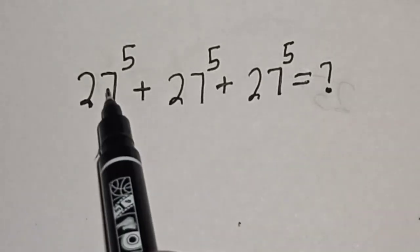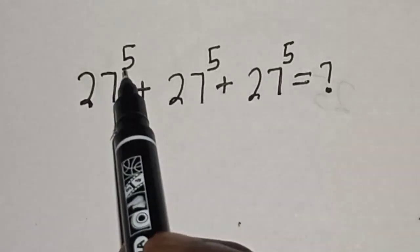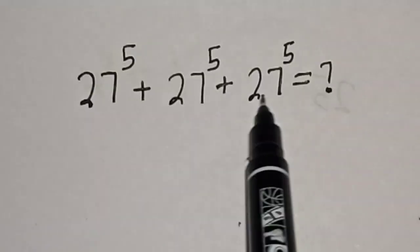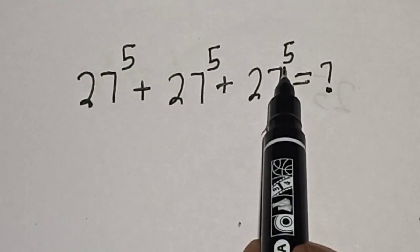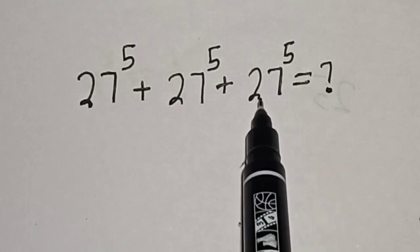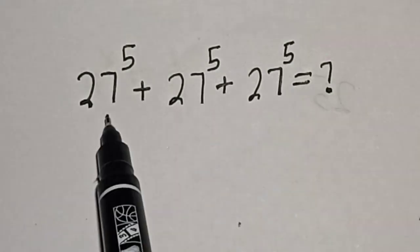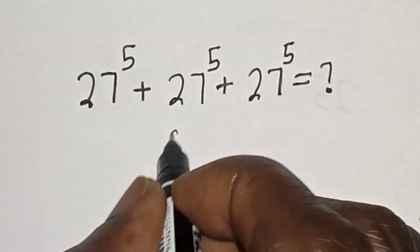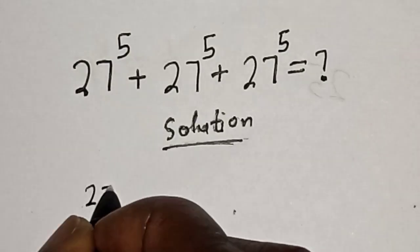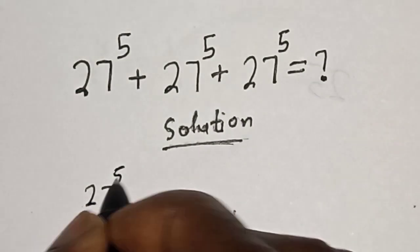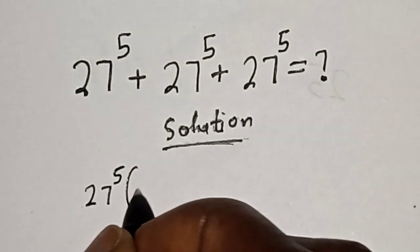Hello, welcome to Magis. 27 raised to power 5, plus 27 raised to power 5, plus 27 raised to power 5 is equal to what? Like, share, comment, and subscribe. Solution: 27 raised to power 5 is common — let's bring it out.